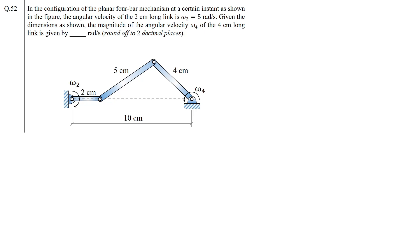We have been given the length of the links and the angular velocity associated with each link in radians per second, as shown in the figure. We have to calculate the magnitude of the angular velocity ω4 of the 4 centimeter long link. This was a two marks question.